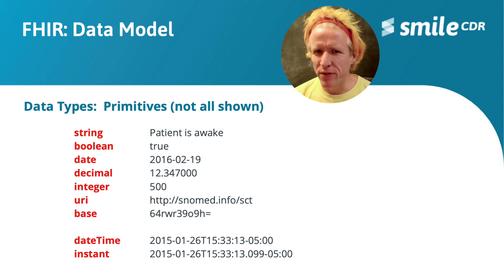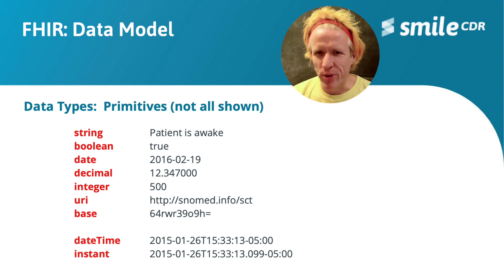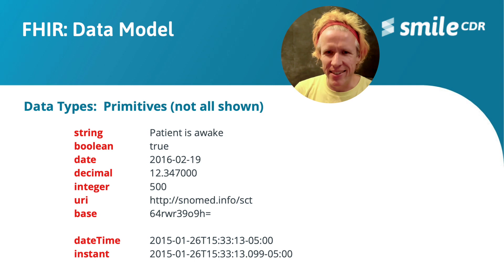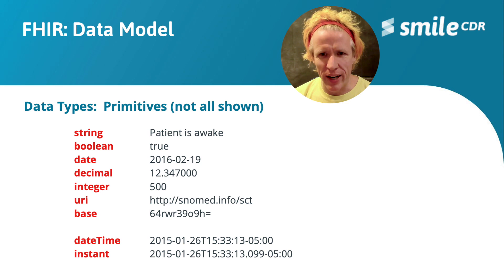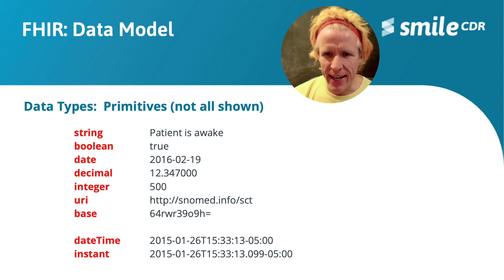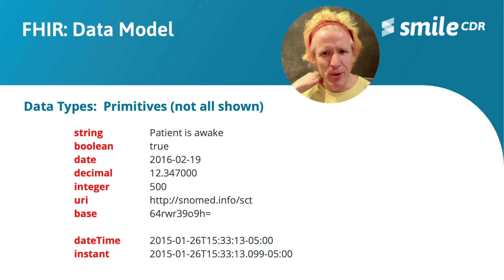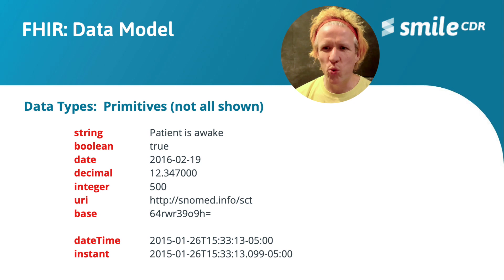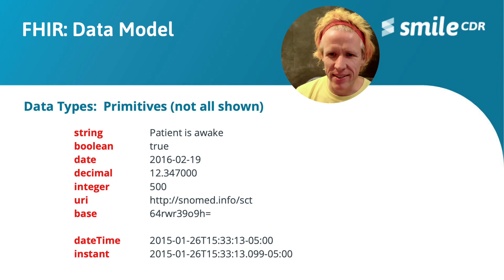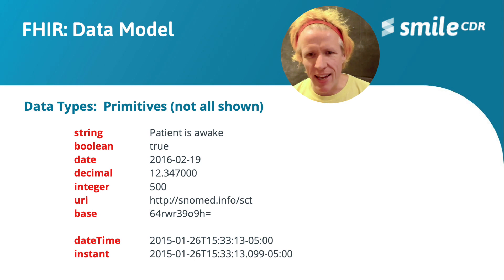Much like any programming language, FHIR has defined a set of data types, and many will seem pretty intuitive to programmers. Just like every programming language, FHIR has concepts like strings, booleans, dates, decimal numbers, and integer numbers. There are a couple more unusual data types: URI is a great example — throughout the FHIR model we use URIs and URLs quite a bit, to the point where they get their own dedicated data type. There's also base64 — a mechanism for encoding binary data into a textual payload, used for things like the patient photo, which can optionally be included as a blob of base64 data in the patient resource.